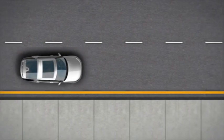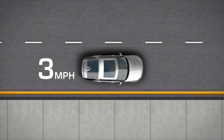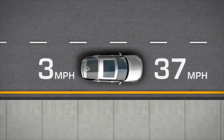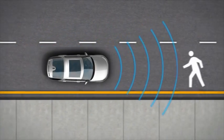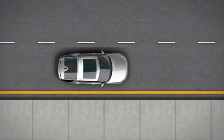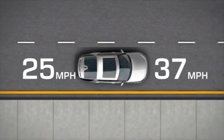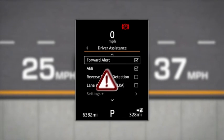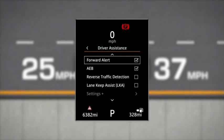The pedestrian AEB detection system operates when the vehicle is travelling between 3 miles per hour and 37 miles per hour. If the pedestrian AEB detects an imminent risk of collision with a crossing pedestrian, it is designed to automatically apply the brakes. If the vehicle's speed is between 25 miles per hour and 37 miles per hour, AEB warning messages are displayed in the message centre just before the brakes are applied.